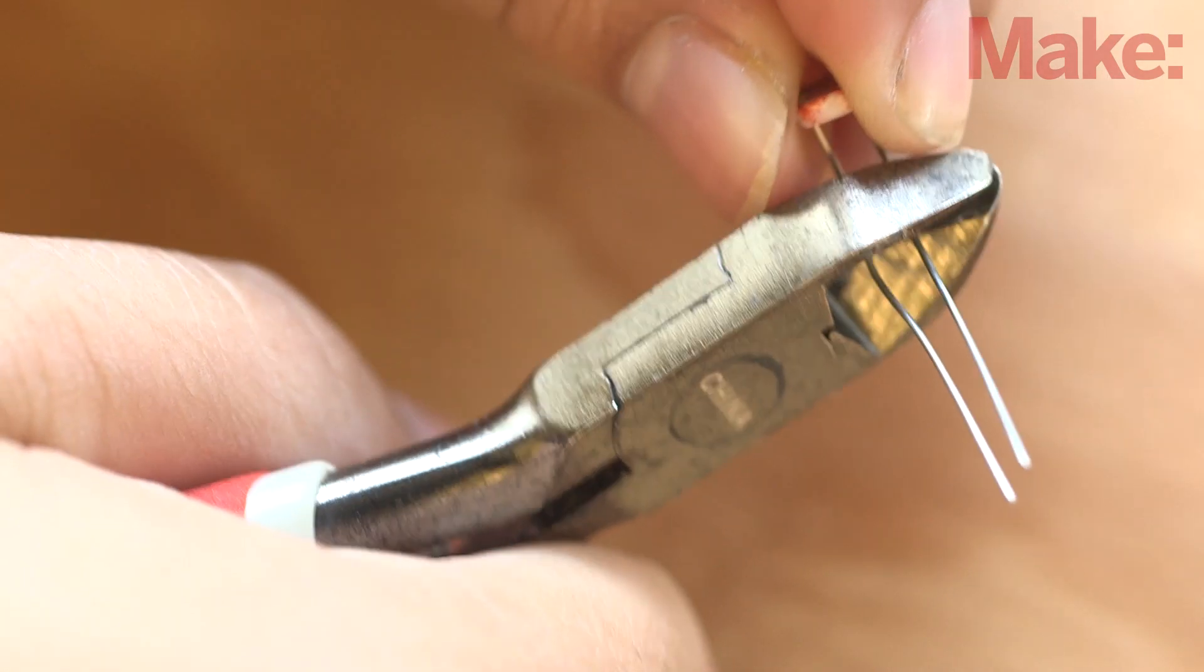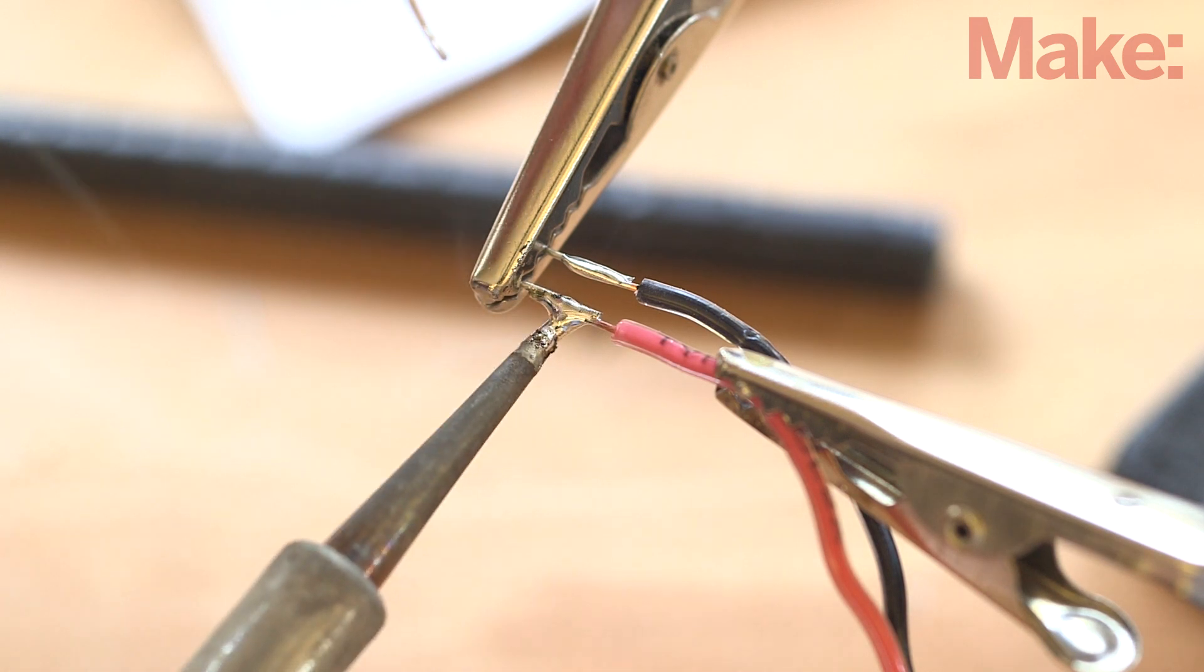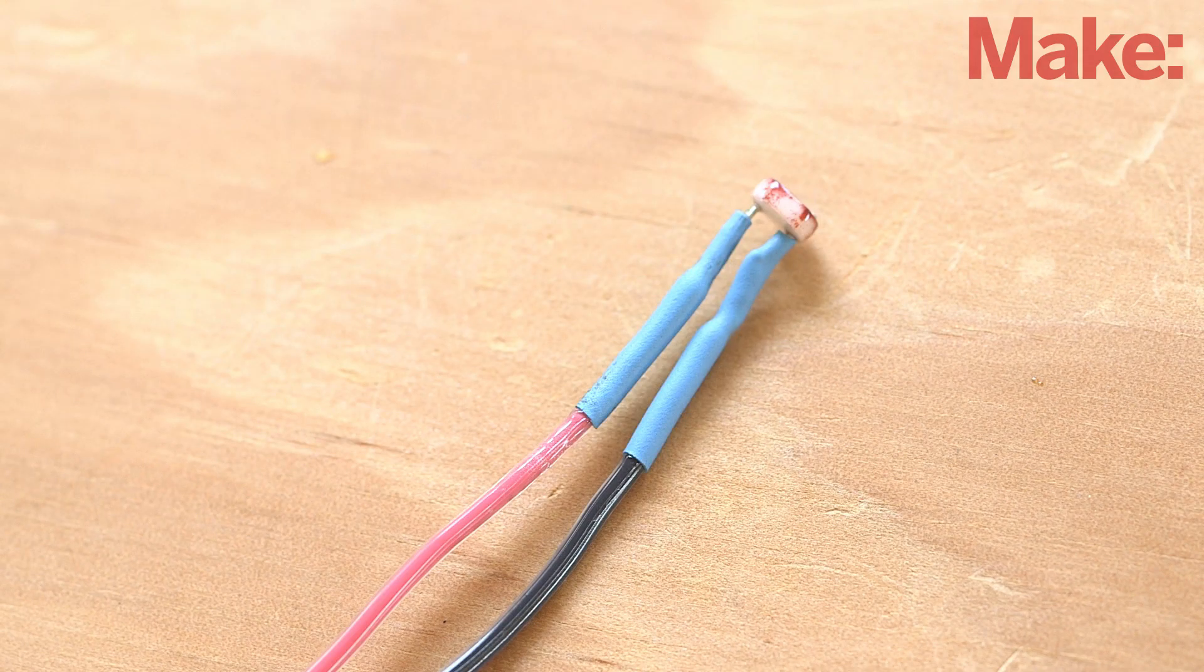Prepare the LDR by trimming the leads and soldering two lengths of wire to the leads. Apply heat shrink tubing to the connections. LDRs are resistors that vary their resistance according to the amount of light shining upon them. Because they are resistors, their leads are not polarized.